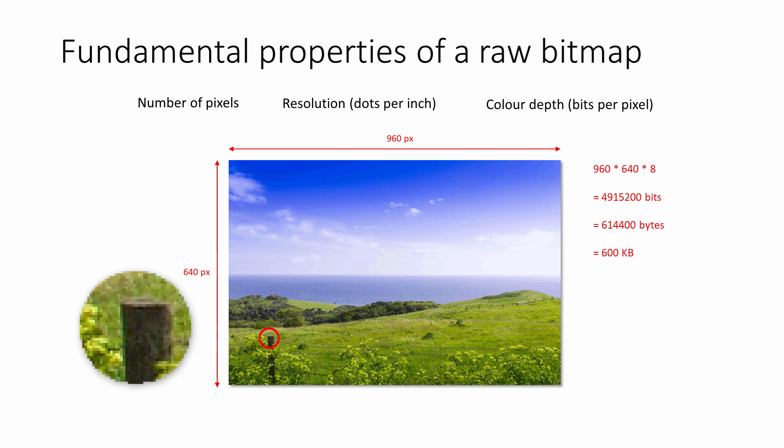With true colour, lots of pixels in an image may well have exactly the same colour code. A small amount of metadata also needs to be saved for the benefit of any software that needs to interpret and display the image. This will include the width and height in pixels, and the all-important colour depth, so the software knows where the information about one particular pixel begins and where it ends.